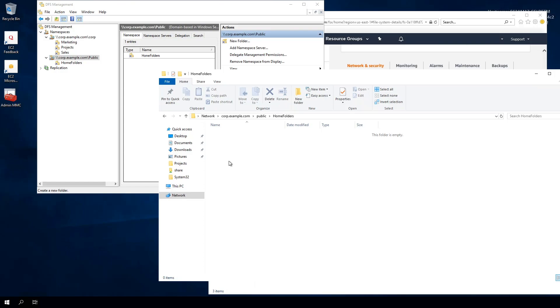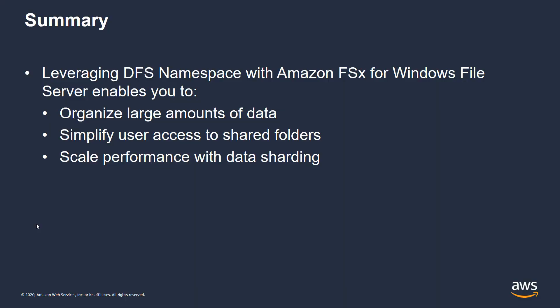Going back to the slides to summarize: in this video you learned how to integrate Microsoft DFS namespaces with Amazon FSx for Windows File Server, which enables you to organize large amounts of data. As demonstrated, underneath a DFS namespace you can map multiple Amazon FSx for Windows File Server file systems, and each of those file systems can host up to 64 terabytes of data. By mapping those file systems to the DFS namespace, you can scale the system as large as you want. We also showed how DFS simplifies user access — instead of memorizing DNS names of each file system, users just go to the DFS namespace hierarchy (corp.example.com/corp) and see the shared folders, each of which maps back to different file systems.